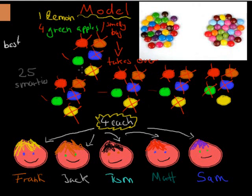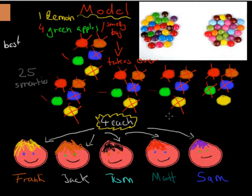If there's some variation — even a tiny variation, like smarties might all have the same chocolate except for a tiny flavouring — that small variation can have a big impact in terms of what happens to you. You can replace the smarties with smelly bugs and normal-smelling bugs, and you have a pretty good model to understand natural selection. Natural selection happens because nature somehow selects certain organisms to be better adapted to that environment than other organisms.